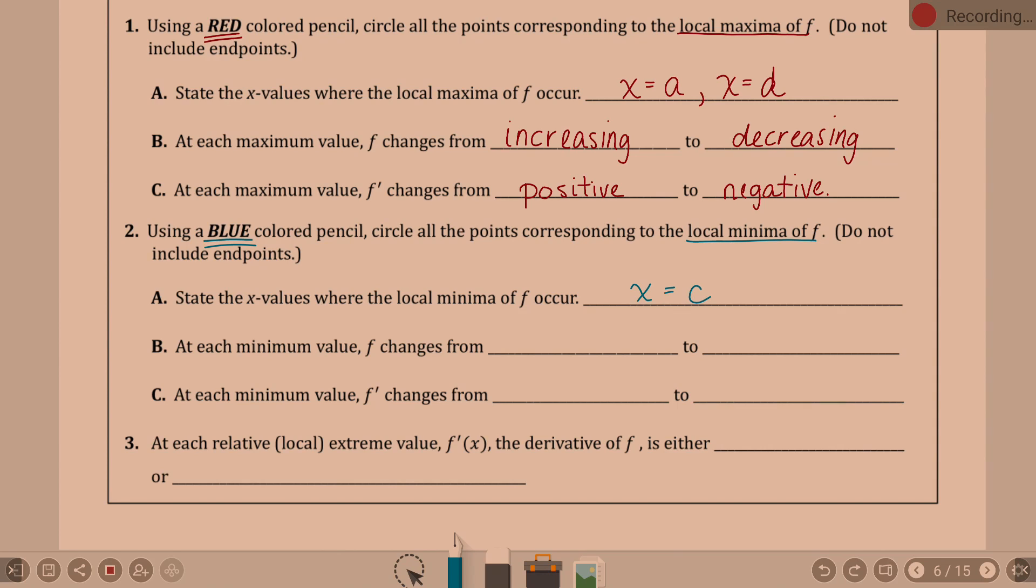At each minimum value, f changes from what? So this is the function. What's it doing? Decreasing and then it increases. It decreases to increases. Decreasing to increasing. Does that mean derivative would be negative to positive? Yeah. Because when you have a graph that is decreasing, that means it's a negative derivative. So the derivative changed from negative to positive.